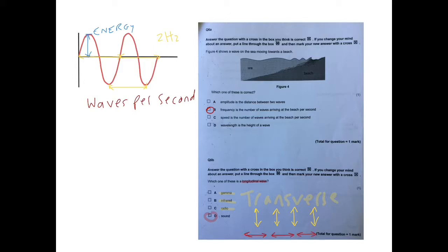Longitudinal waves, however, disturb or cause particles to oscillate back and forth in relation to the direction of energy flow. So the particles will be doing this as they are disturbed by the energy. Whereas transverse waves will be doing this as they are disturbed by the energy.